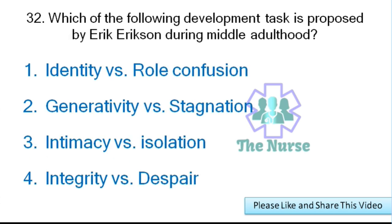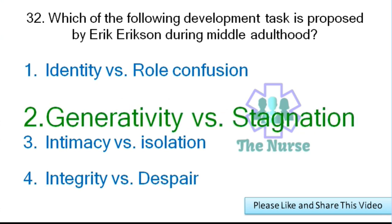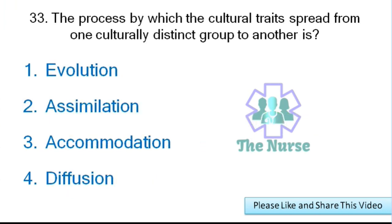Next question: Which of the following developmental tasks is proposed by Erik Erikson during middle adulthood? Options: identity versus role confusion, generativity versus stagnation, intimacy versus isolation, or integrity versus despair. Correct answer: generativity versus stagnation.